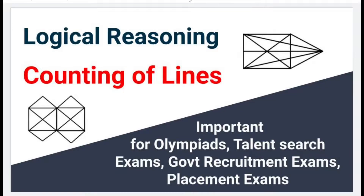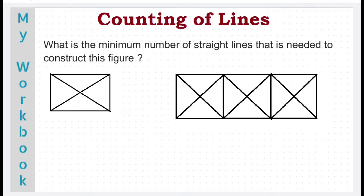So with no further delay, let's begin. The pattern of the question will be like: what is the minimum number of straight lines that is needed to construct this figure? We just have to count the number of straight lines in any given figure. Sounds easy, doesn't it? However, there are some common mistakes that we tend to make while solving such questions — counting the same line more than once, missing to count few lines, or counting a single long line as multiple short lines. These are some of the mistakes that we tend to make and unnecessarily lose marks. So in this video, I'll be showing you a very simple method which will help you to overcome such common errors.